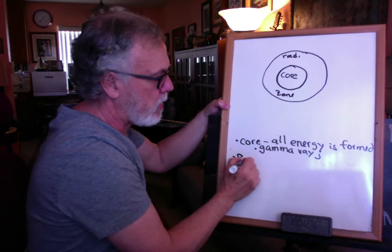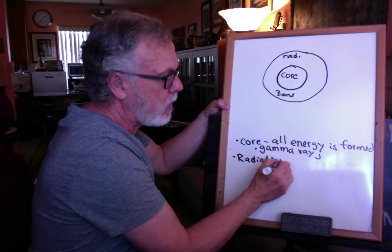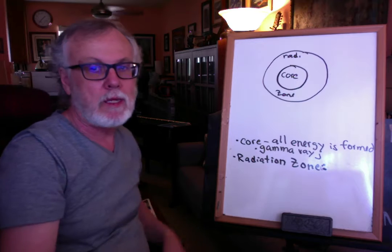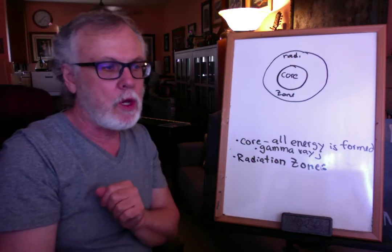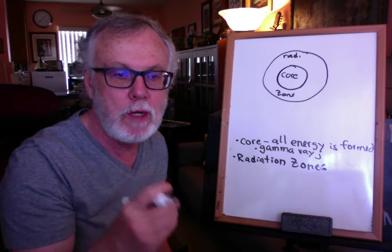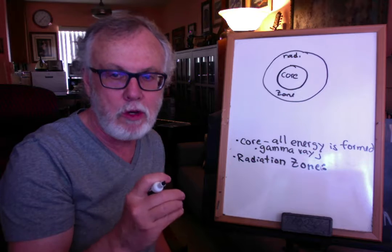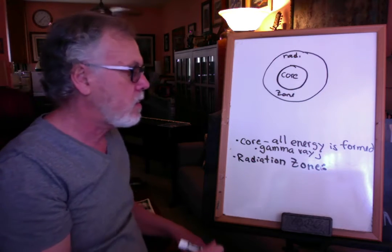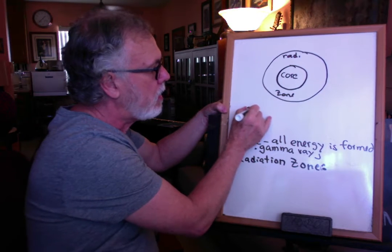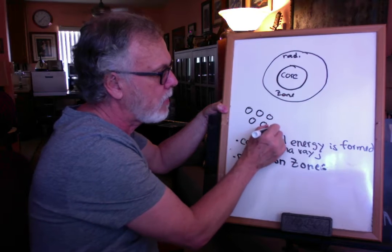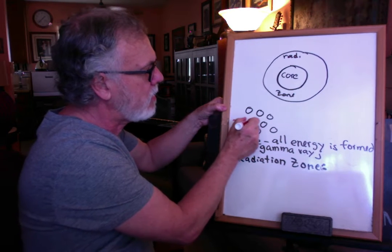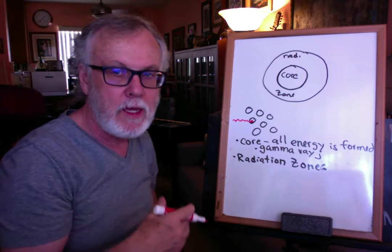The radiation zone is where energy is transporting in the form of very high, powerful light rays. It's cooler than the core, so there's no possibility of new energy forming there — all that's happening is energy transporting through. We have atoms of hydrogen and helium and traces of heavier atoms, and gamma rays coming out of the core get absorbed immediately by an atom.